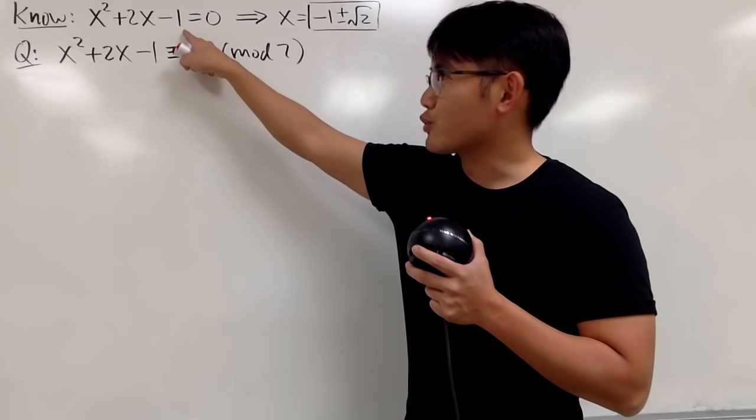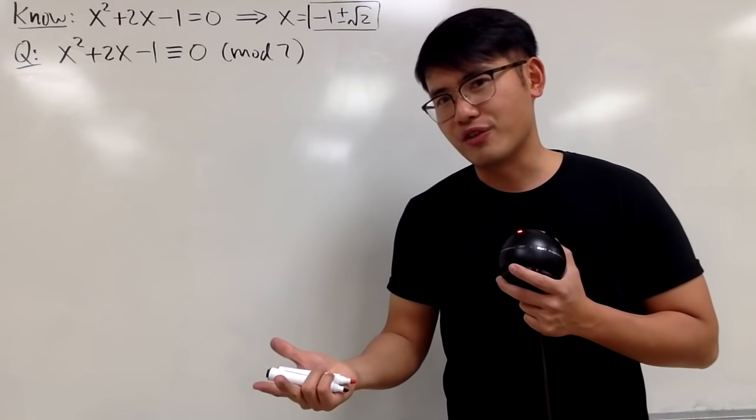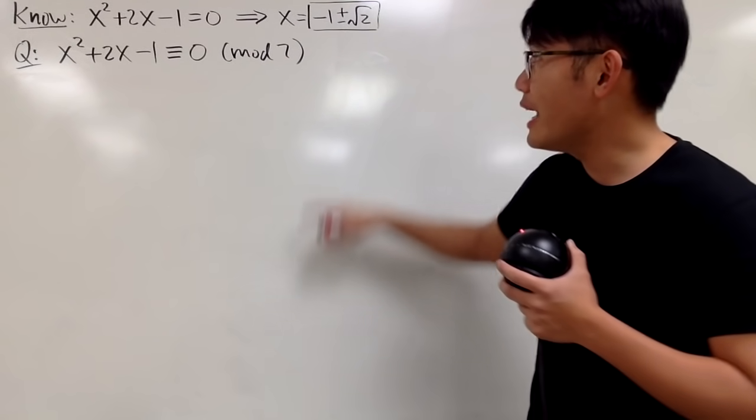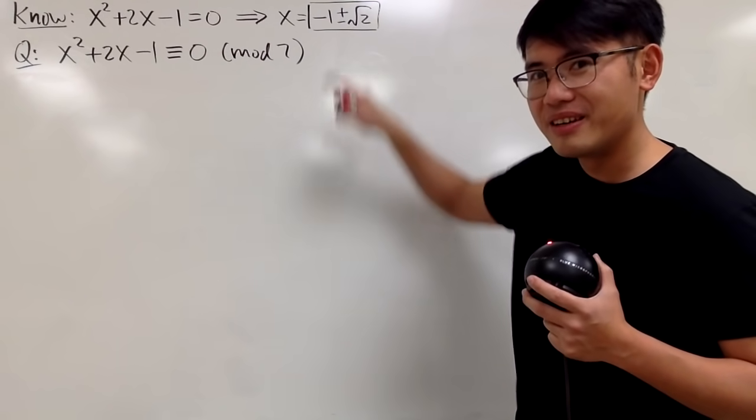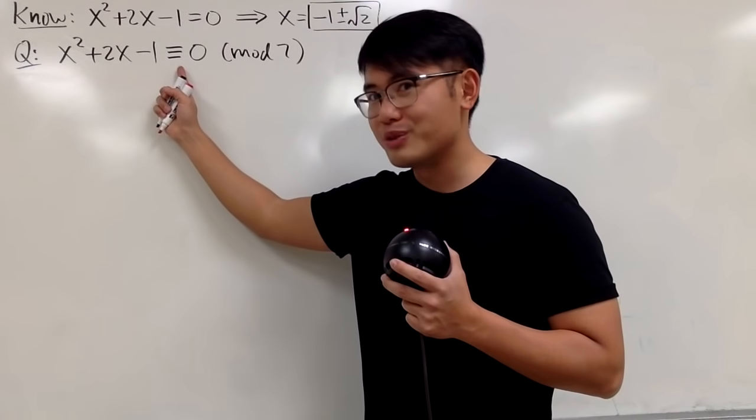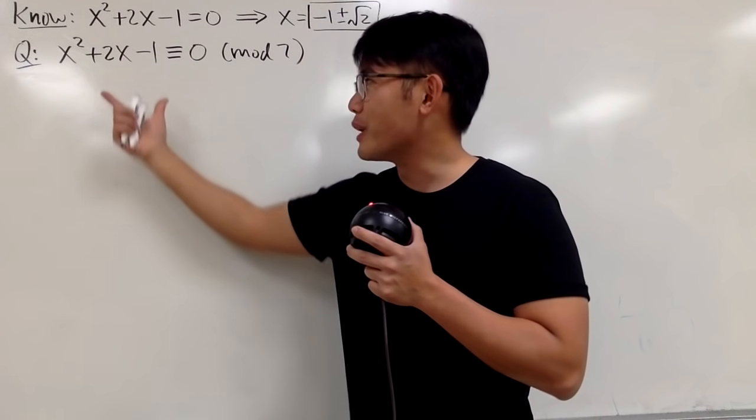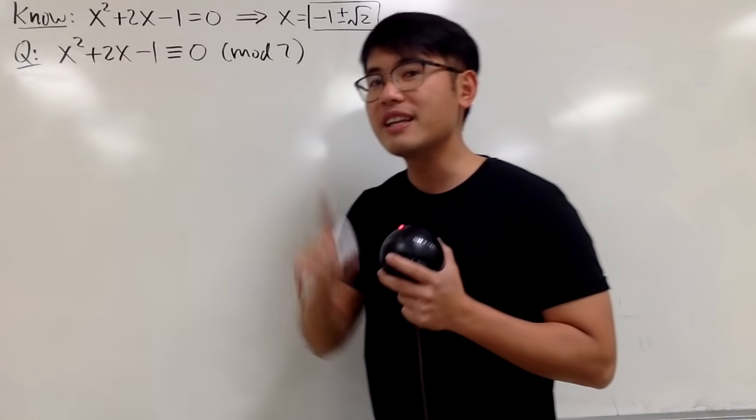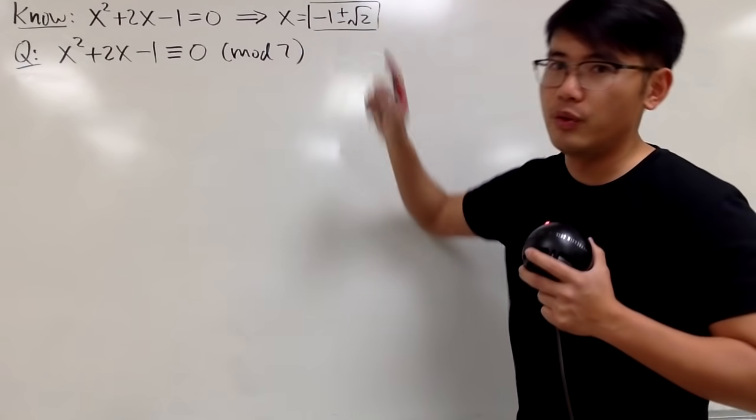Okay, as we all know, whenever we have a quadratic equation, we can just use the quadratic formula or complete the square, and we'll end up with this for the answer. But have you guys ever thought about what if we have a congruence right here instead? And yes, this right here is a quadratic congruence,